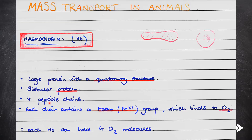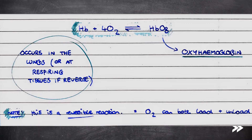Each chain contains a heme Fe2+ group which binds to oxygen, and therefore each haemoglobin molecule can hold up to four oxygen molecules.